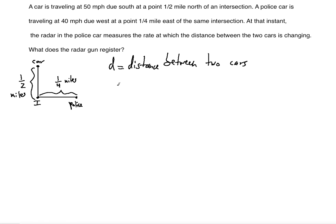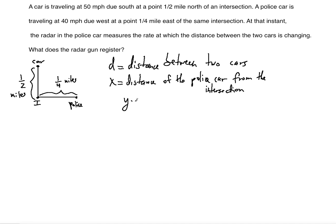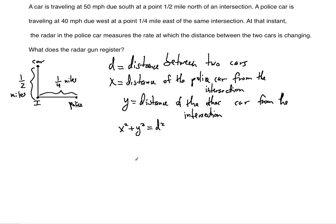We define x as the distance of the police car from the intersection, and y as the distance of the other car from the intersection. The distance d is the hypotenuse of this right triangle. So the Pythagorean theorem gives us x² + y² = d².